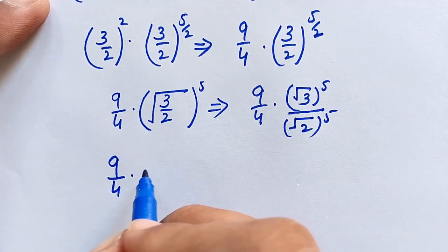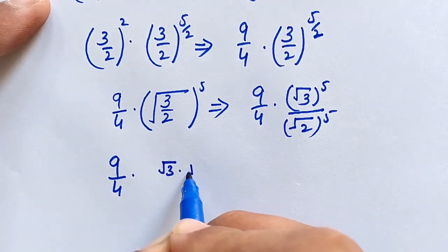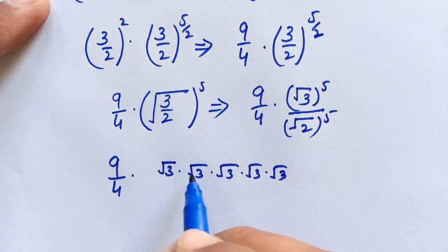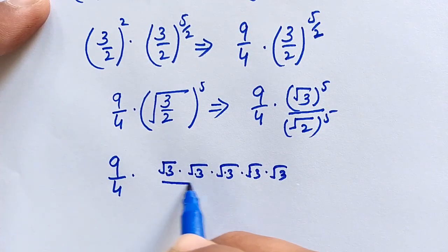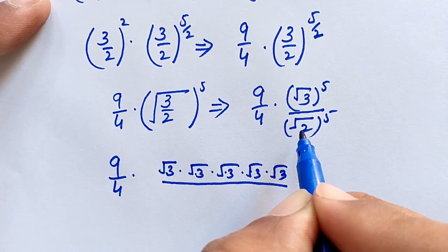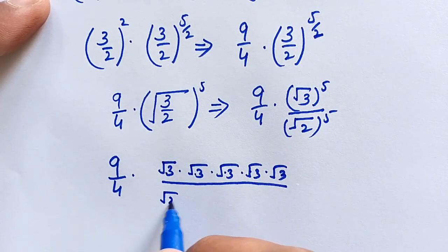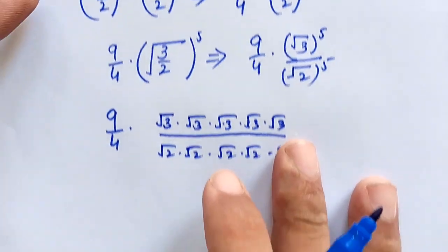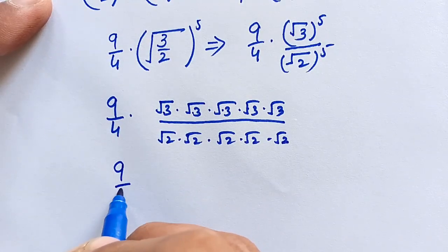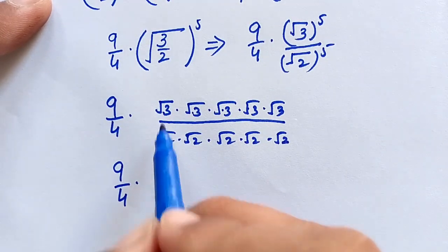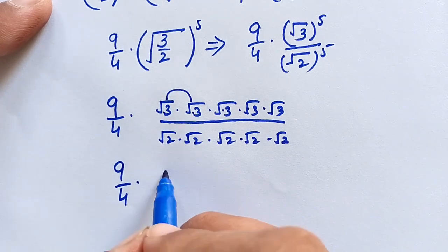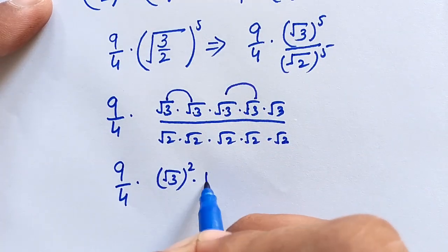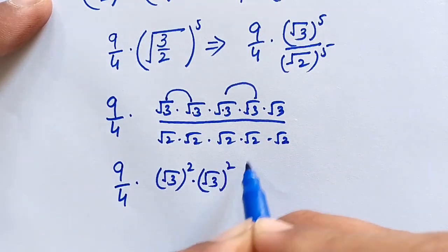Expanding: √3 to the power of 5 means √3 × √3 × √3 × √3 × √3 (five times). Similarly, √2 to the power of 5 is √2 × √2 × √2 × √2 × √2. Grouping pairs: √3 × √3 = √3² and √3 × √3 = √3² again, leaving one √3 remaining.